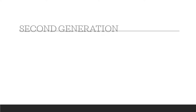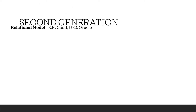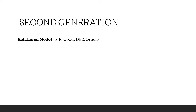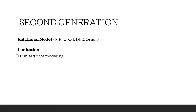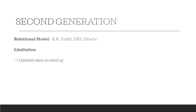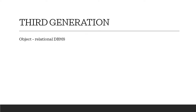Second generation: the relational model — ERCODD, DB2, Oracle. Limitation: limited data modeling. The third generation includes object-relational DBMS and object-oriented DBMS.